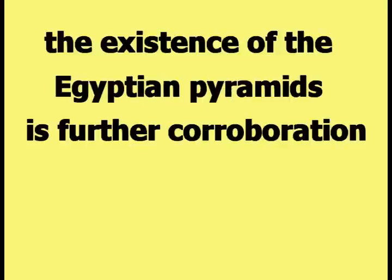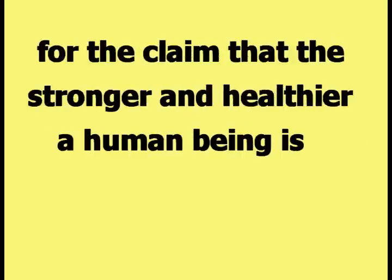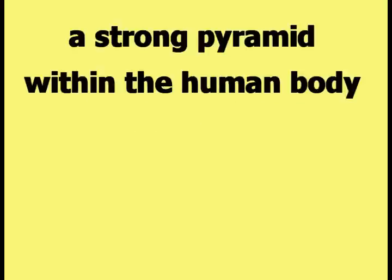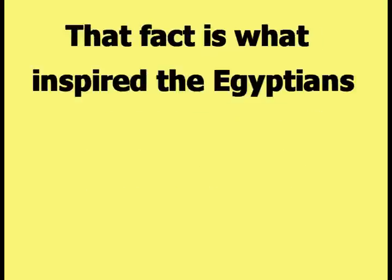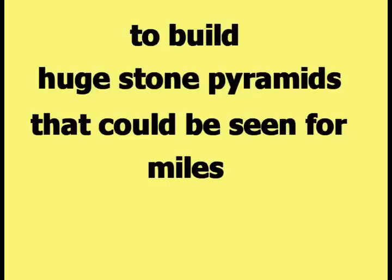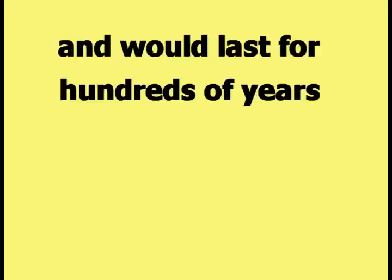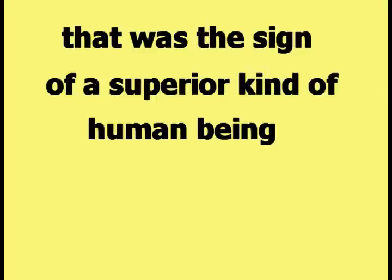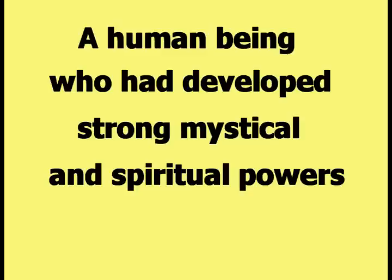According to Happy Theory, the existence of the Egyptian pyramids is further corroboration for the claim that the stronger and healthier a human being is, the more pronounced and obvious the pyramid within the human body becomes. According to Happy Theory, a strong pyramid within the human body is associated with the development of strong mystical and spiritual powers. That fact is what inspired the Egyptians to build huge stone pyramids that could be seen for miles and would last for hundreds of years. The Egyptians were building monuments to the pyramid shape inside of the human body — the sign of a superior kind of human being who had developed strong mystical and spiritual powers.